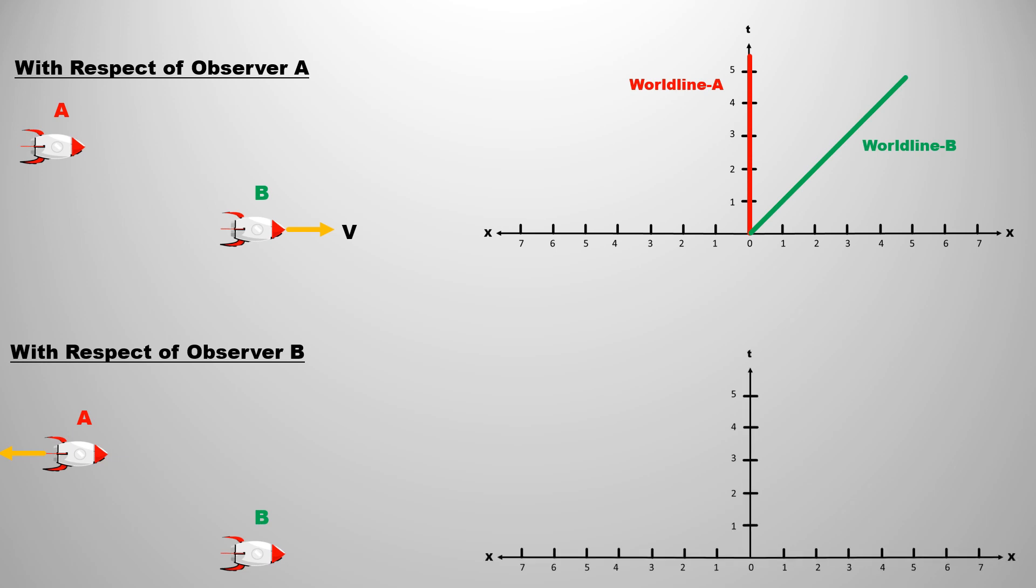So, according to observer B, his own world line will be on the time axis and with respect to him, world line of A will be on the left side.